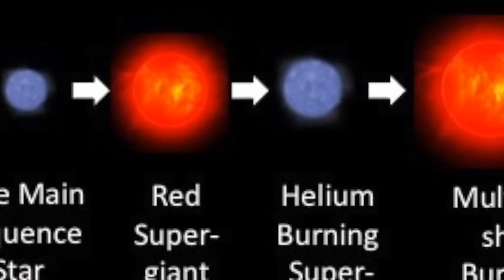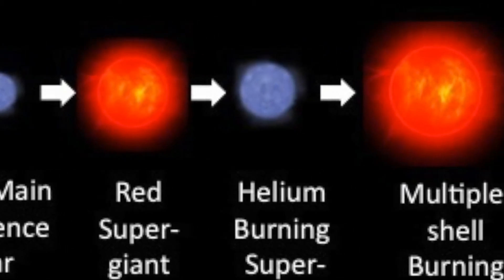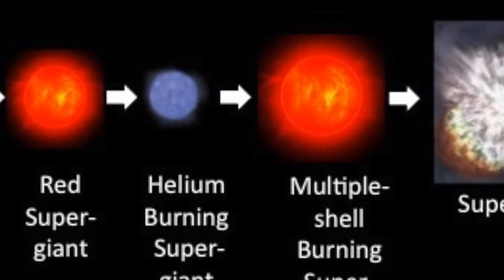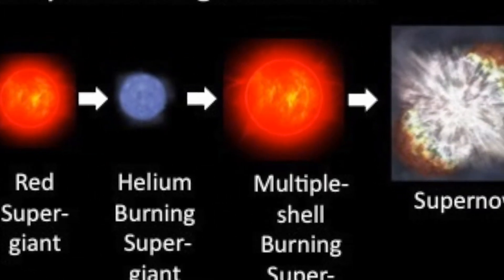After this, a supernova. The iron cannot provide fusion energy, so it accumulates in the core till it can no longer be supported, and after this it explodes catastrophically.